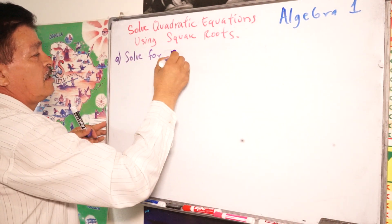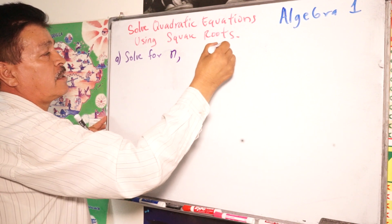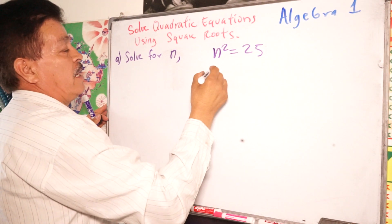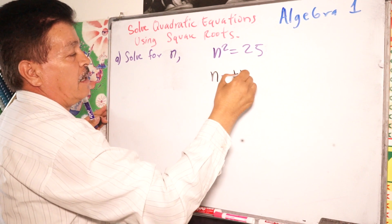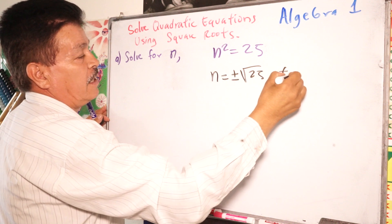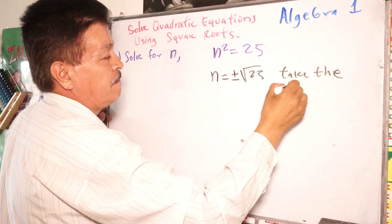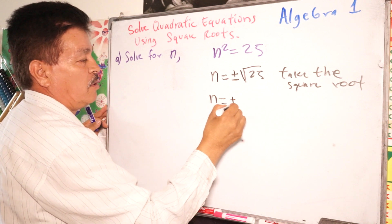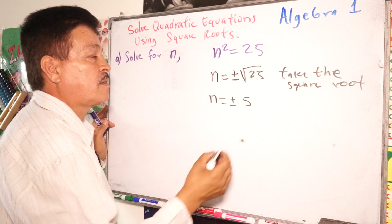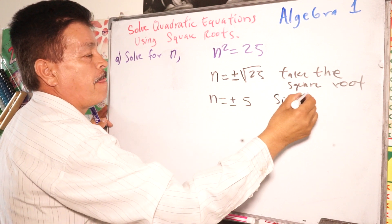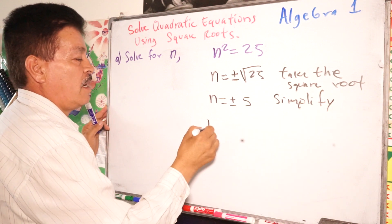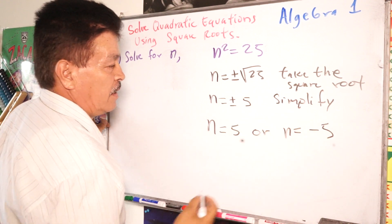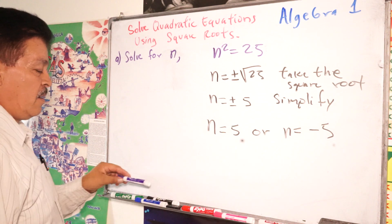Now solve for n. Our problem is n squared equals 25. The next step: n equals positive or negative square root of 25, which is 5. So our answer is n equals 5 or n equals negative 5. Very simple topic for Algebra One.